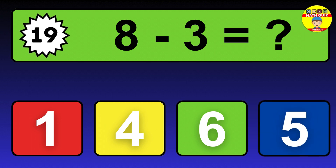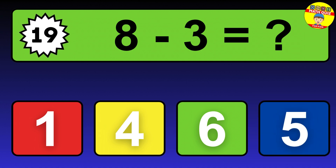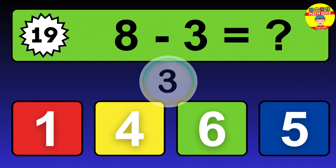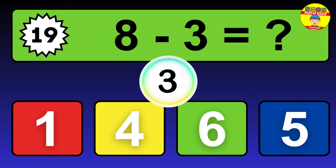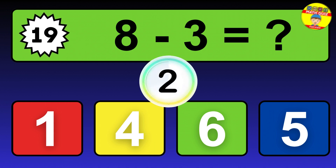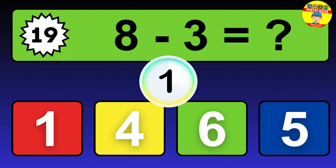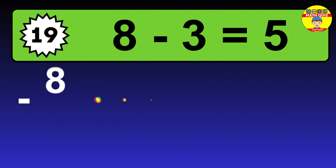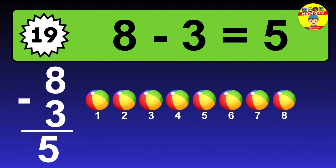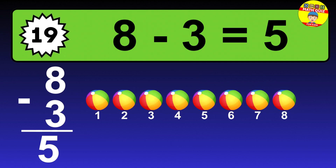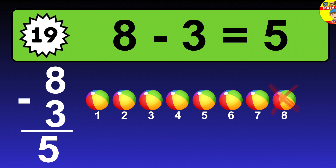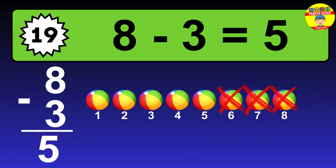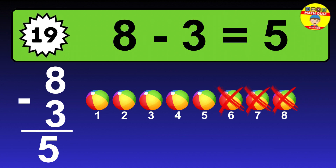Question 19. 8 minus 3 equals what? The answer is 8 minus 3 is 5. Let's count it: 1, 2, 3, 4, 5.